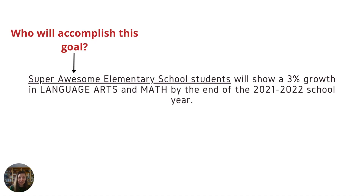First, it indicates exactly who is going to accomplish the goal. And remember, it should always be students. That can be your entire school, one particular grade level, or one subset of students. But you need to be clear about who is going to accomplish the goal.